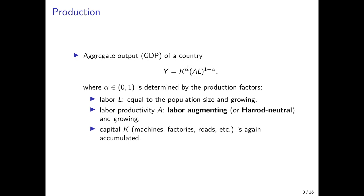We have the output elasticity of capital, which is alpha, and the output elasticity of effective labor, which is 1 minus alpha. Alpha is between 0 and 1 as before. The population size or labor force is now allowed to grow over time, and the same holds true for labor productivity. Labor productivity appears in labor-augmenting form, multiplied with the production factor labor. We have capital — machines, factories, infrastructure — which is, as in the previous version of the model, an accumulated production factor.